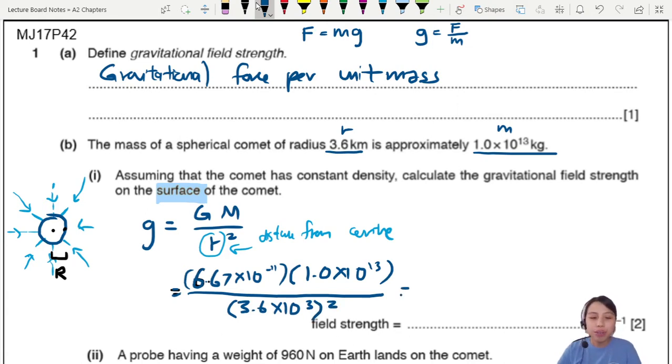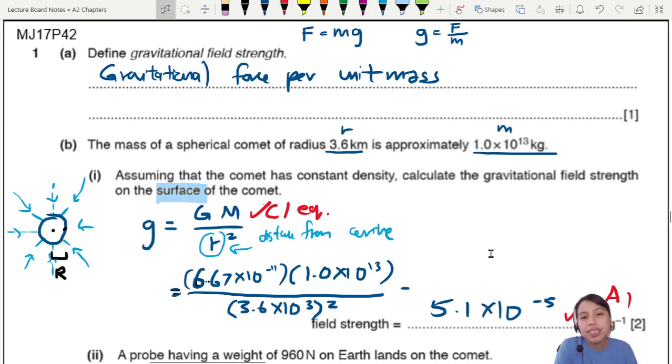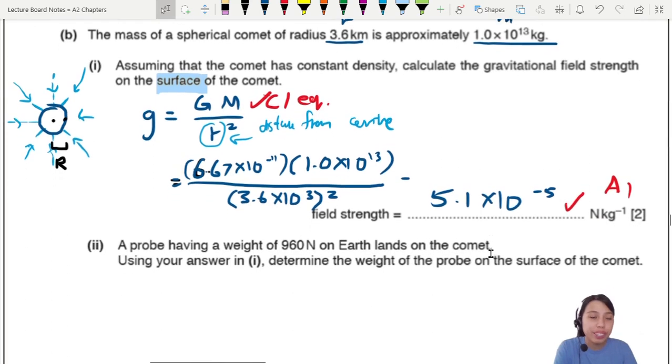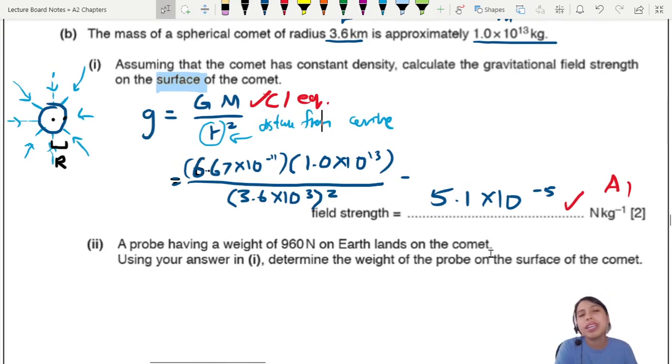This will give us a value of 5.1 times 10 to the negative 5. That's the final answer, 2 marks. If you knew this equation - it's good to make a list by the way for all your gravitation equations. This chapter has a lot of equations, especially with circular motion. Take an A4 paper, fold it in half, write everything there.